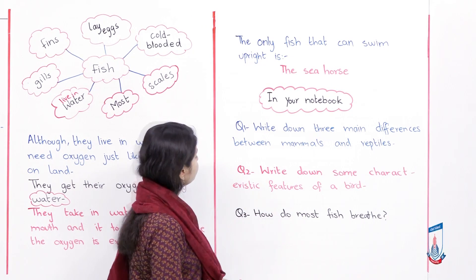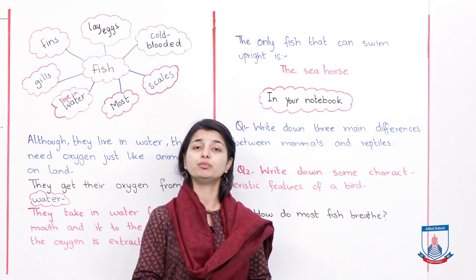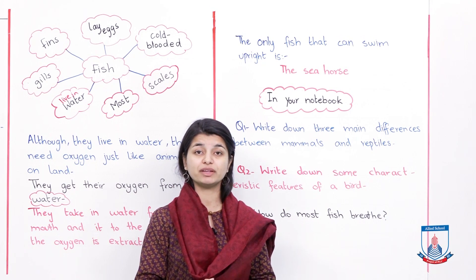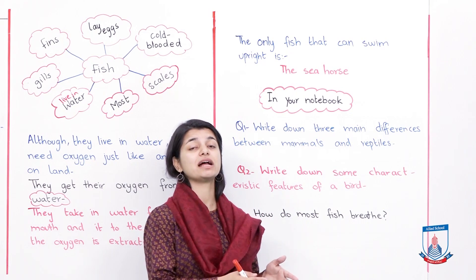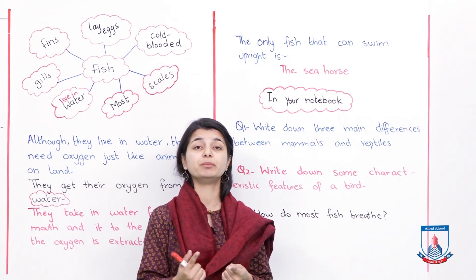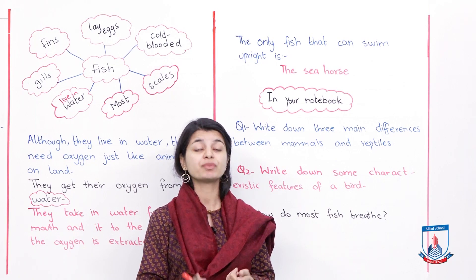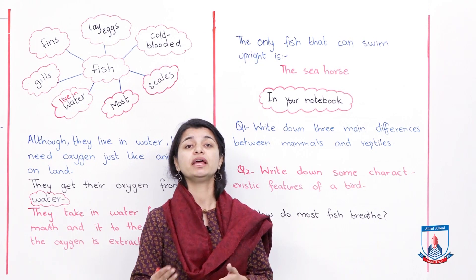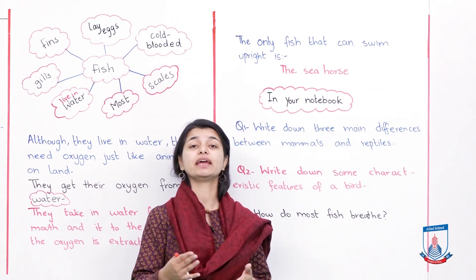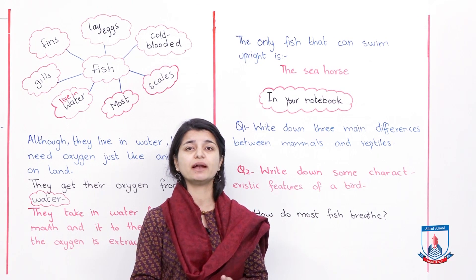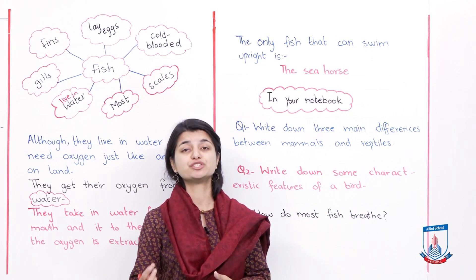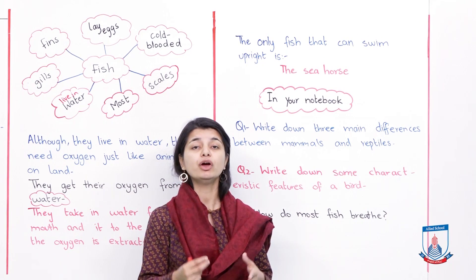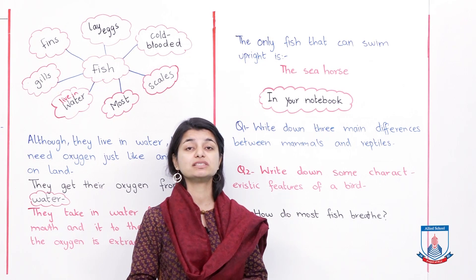Question two: write down some characteristic features of a bird. We discussed birds in the previous lecture. Some points you can include: birds have beaks, they are warm-blooded, they have feathers and wings, they have scales only on their legs and feet, they lay eggs with hard shells, they are able to fly though not all of them can, and they also have a furcula known as a wishbone. Write those characteristics clearly in your answer.